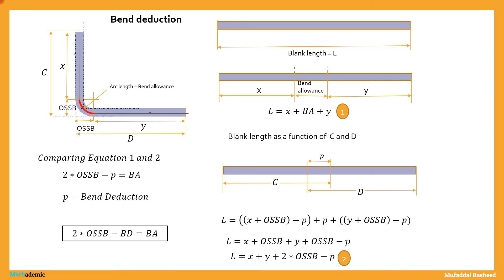These three are the important parameters required to be specified for design, manufacturing, and drawing preparation: OSSB (outside setback), bend deduction, and bend allowance. Thank you very much.